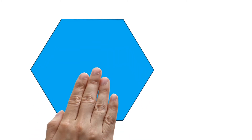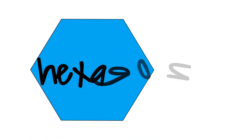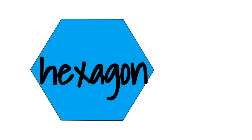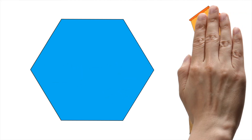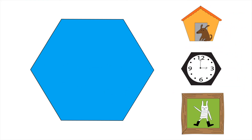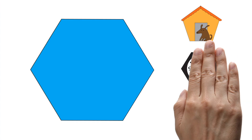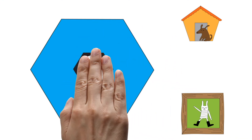This is a hexagon. Can you see an object that is shaped like a hexagon? The clock is shaped like a hexagon. Hexagon.